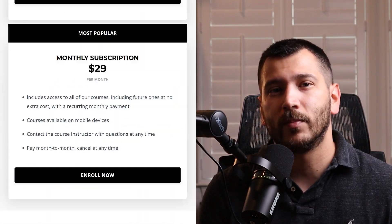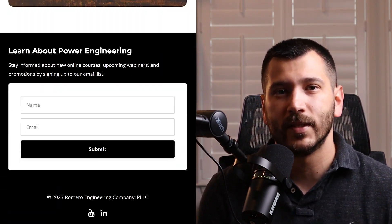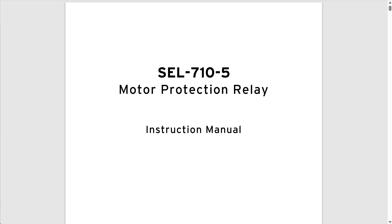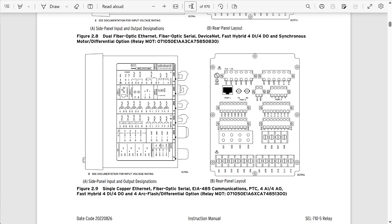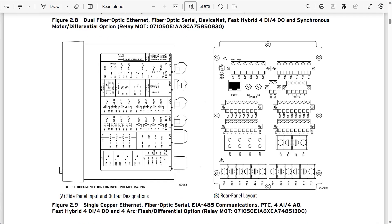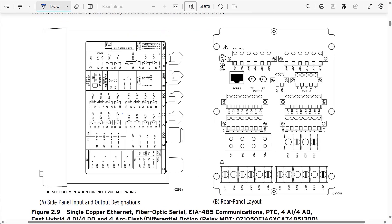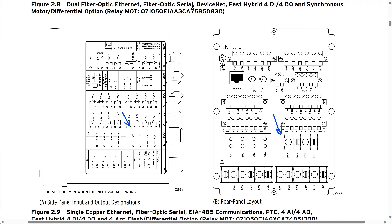Let's take a look at how we can set up the motor differential protection using the SEL-710 relay. In order to implement the current differential scheme, we have to make sure the relay includes the dedicated CT inputs for the differential element. If we go to the instruction manual on page 75, the terminals are E05 through E08 — these are dedicated CT inputs just for the differential function.